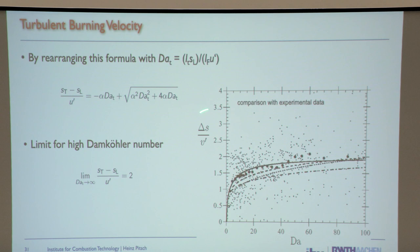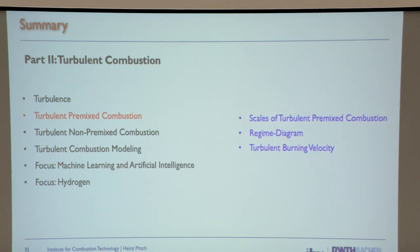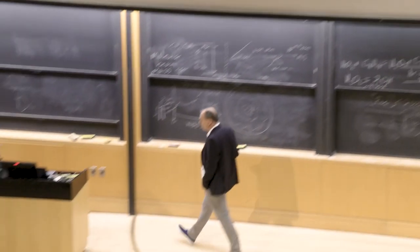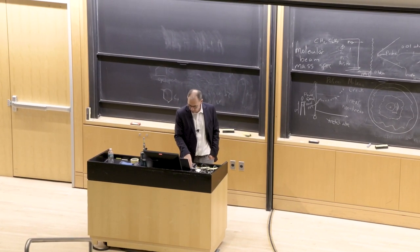Comparing with experiment, the individual measurement points are all over the place. Taking the conditional mean gives the larger black points. The solid line is the model prediction, and it's not so bad, even though it cannot capture the large scatter. The dashed lines are alternative models. That covers premixed turbulent combustion flame physics and the burning velocity.